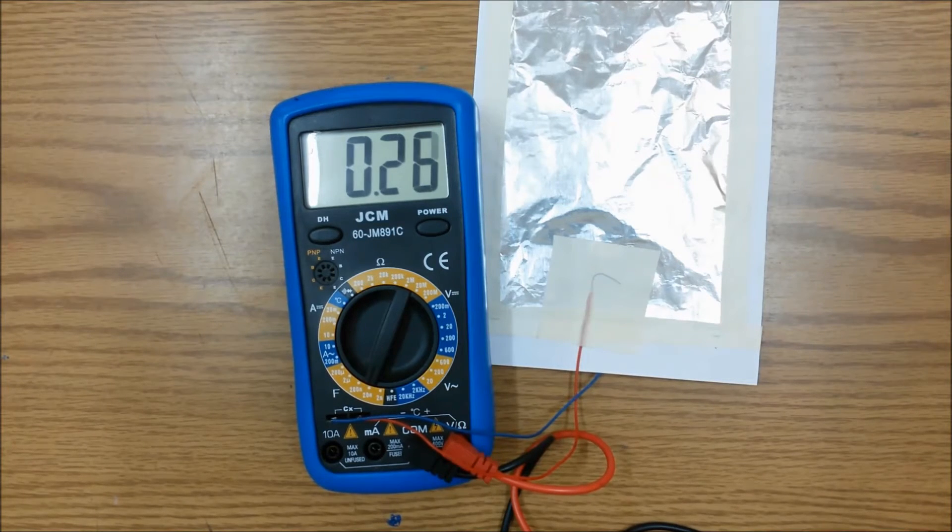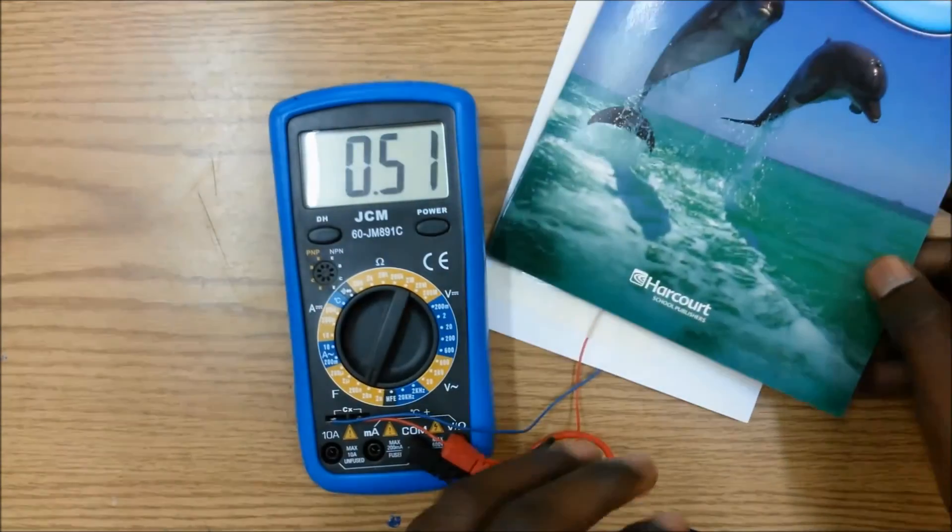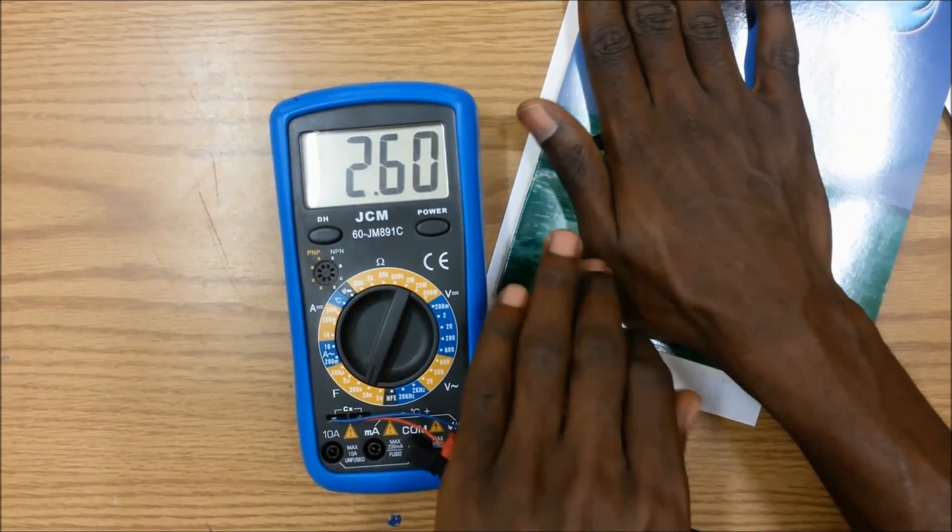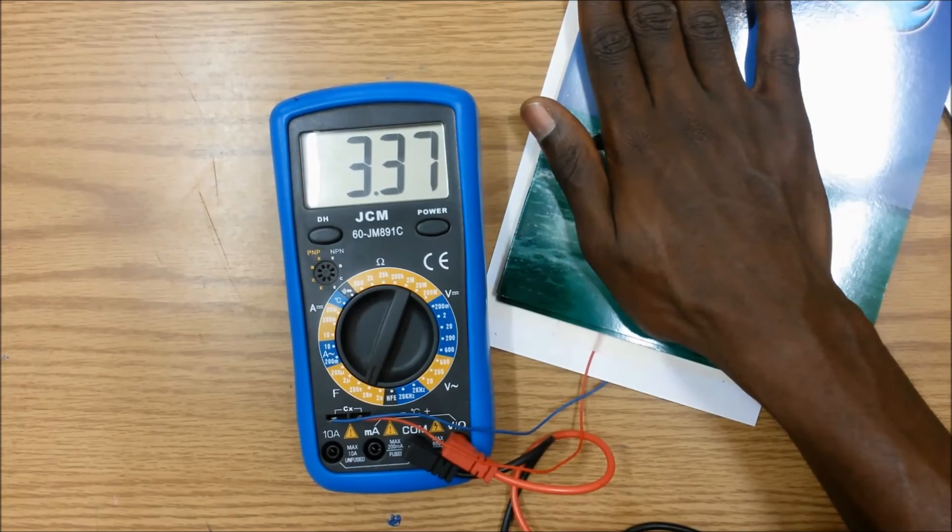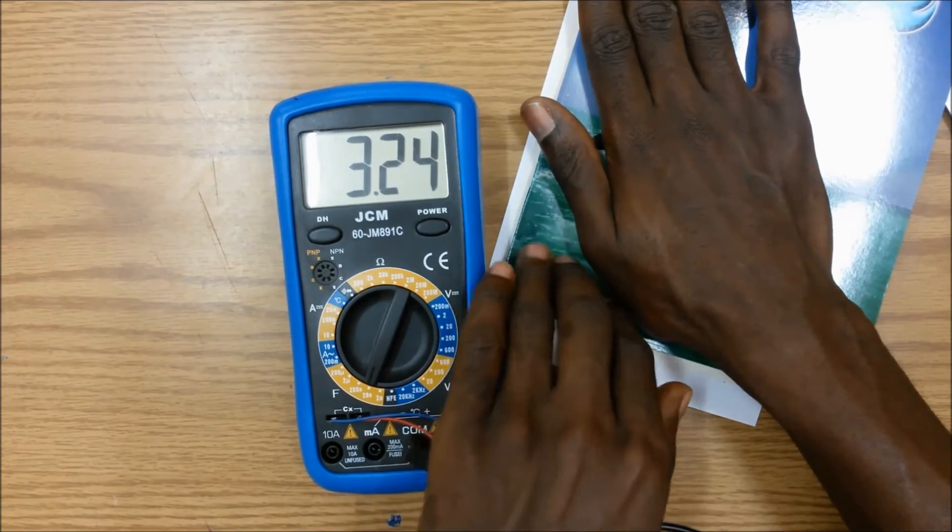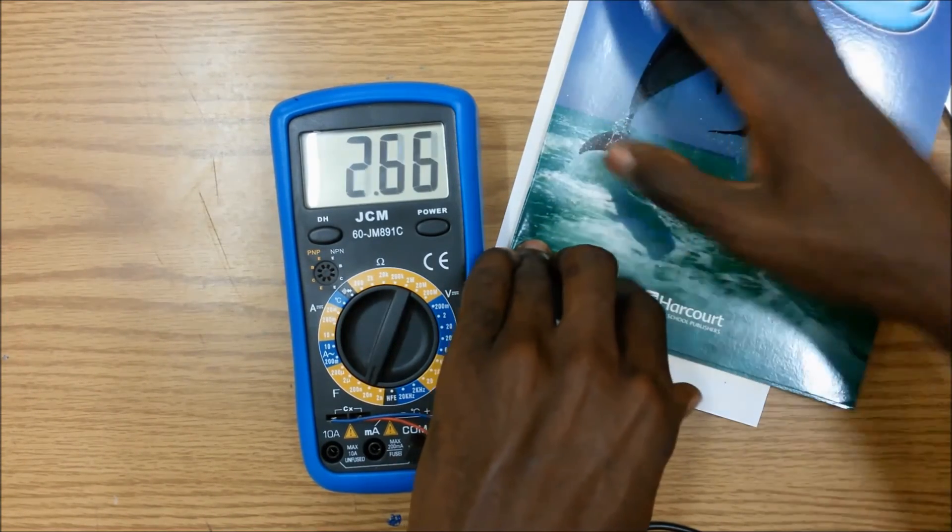Let's try to see what would happen if we were to change some of the physical properties of this capacitor. First we're going to change the distance between the two plates. By using a couple books to press down on the capacitor, we have effectively decreased the distance between the two plates.